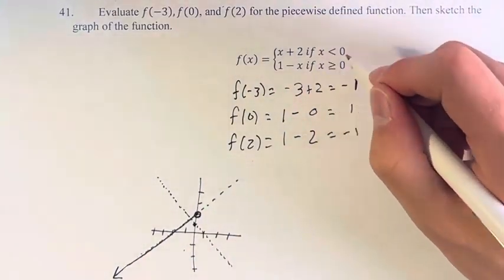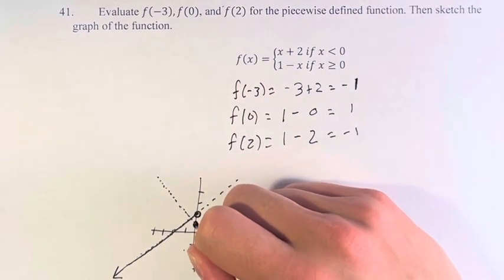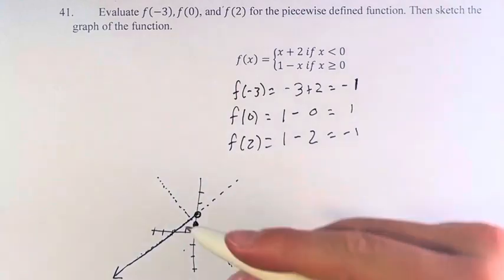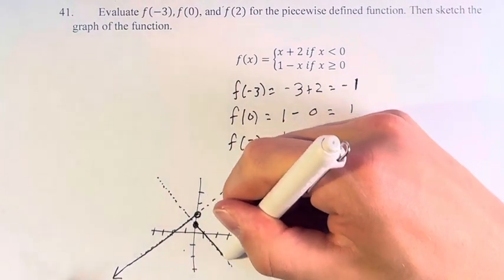Then we start at, for x is greater than or equal to 0, we have a solid circle there. And then x is greater than 0 goes in this direction.